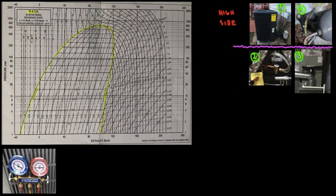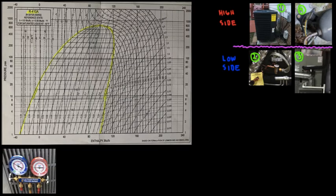The other side is blue, and we call that the low side. The low side is related to the evaporator — low pressure and low temperature — because the TXV makes sure of that. So the condenser and compressor are at high pressure and high temperature, while the evaporator side is at low pressure and low temperature. The blue gauge tells you the pressure and temperature of the evaporator, and the red gauge tells you the pressure and temperature of the condenser.